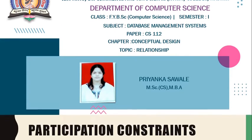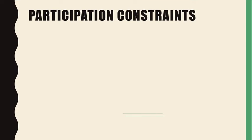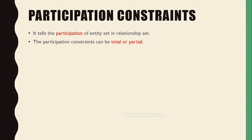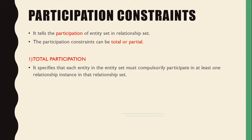Now we discuss participation relationships. In participation constraints, those entities which are participants in a relation are subject to participation constraints. It is the participation of an entity set in a relationship set. The participation constraints can be either total or partial. Total participation specifies that each entity in the entity set must compulsorily participate in at least one relationship instance in that relationship set.